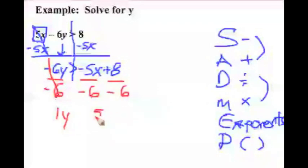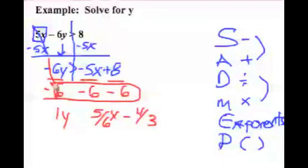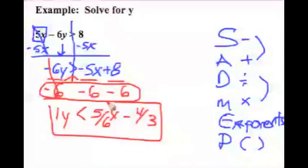Negative 6 over negative 6 is positive 1y — you don't have to write the 1. Negative 5 over negative 6 is positive 5-sixths x. And 8 over negative 6, when we reduce it, is negative 4-thirds. Now one key point: we divided both sides by a negative. Dividing by that negative 6 causes the inequality symbol to flip direction. So instead of greater than, it becomes less than. And there you go — you've solved the inequality.